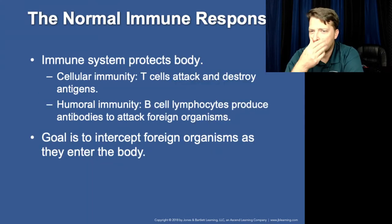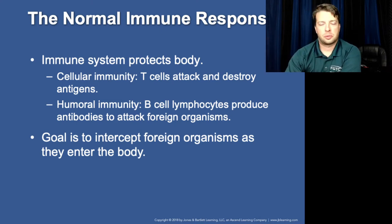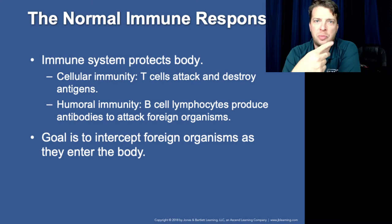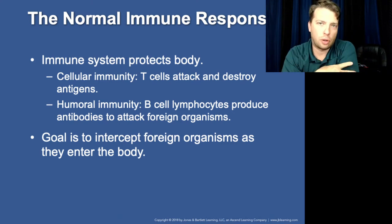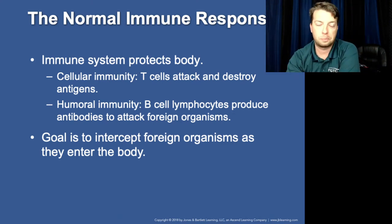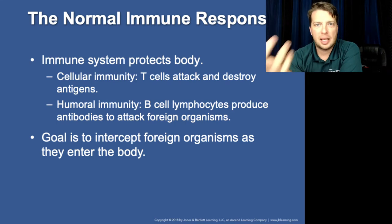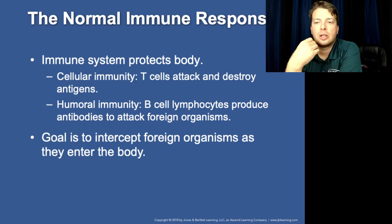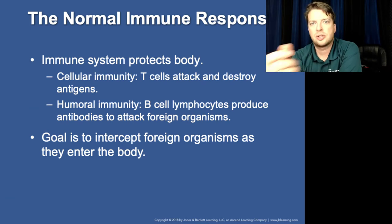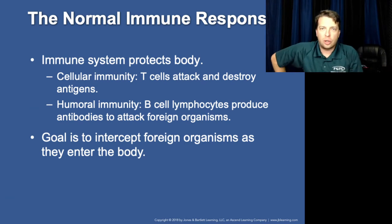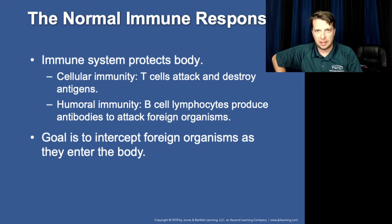This is our normal immune response — how we normally should function. We have two forms of immunity: cellular and humoral. Humoral immunity uses antibodies within the blood and is regulated by plasma cells, whereas cellular immunity's primary cell is going to be T cells. The T cells are actually attacking the organism or the infected body cell.